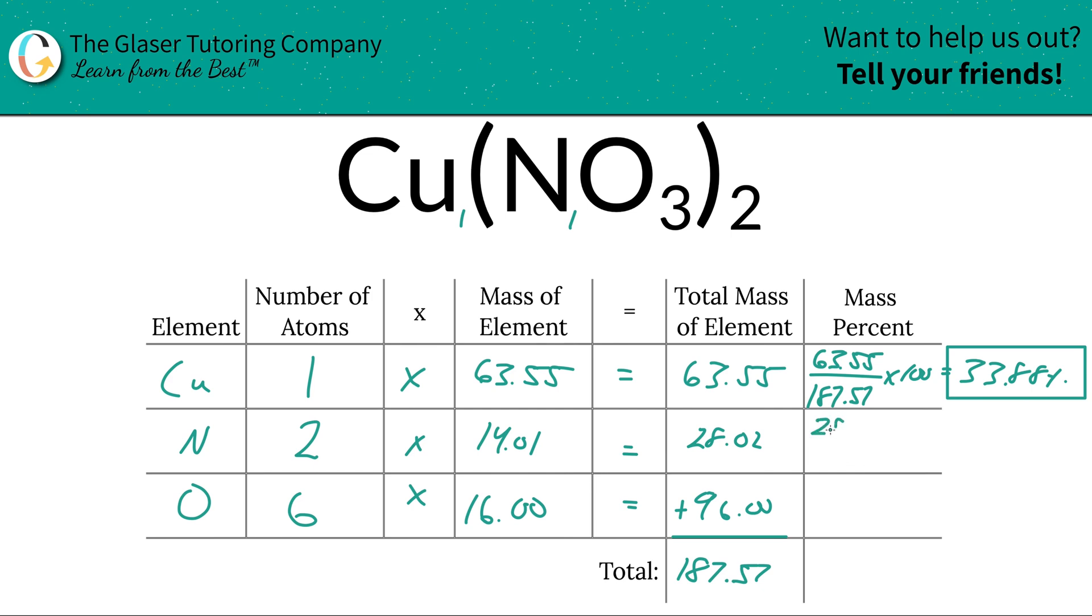Nitrogen, same process, total mass 28.02 divided by the total 187.57 multiplied by 100 and calculate that. So that's going to be 14.94 or so. And that's in terms of percent.